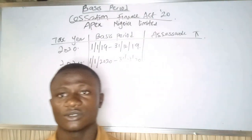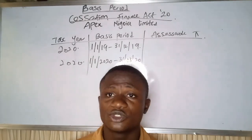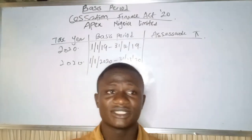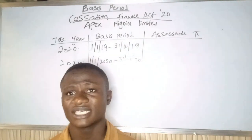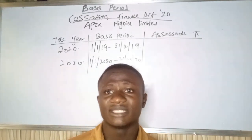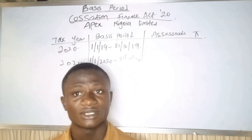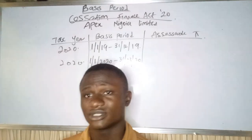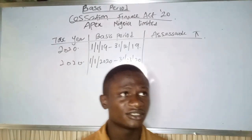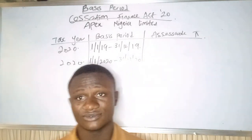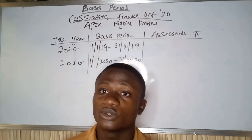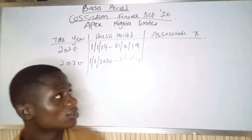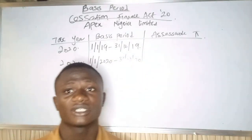The reason we add six months is simple: when a business ceases operation, it's not straightforward. They might still have debtors outside, they might still need to pay creditors, and there may still be money coming in even after cessation. That is why the tax authority requires businesses to remit their tax six months after the date of cessation.